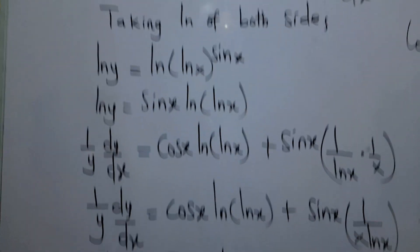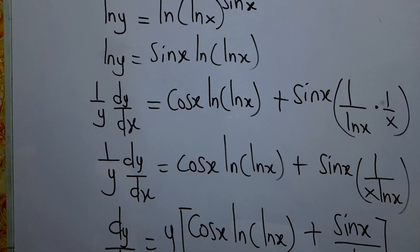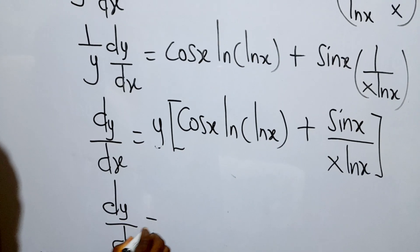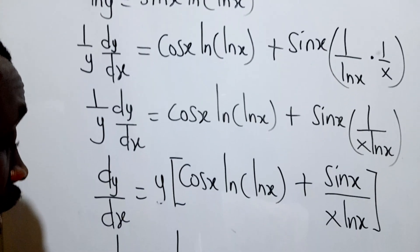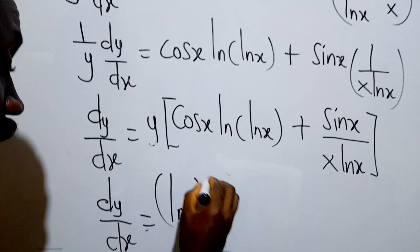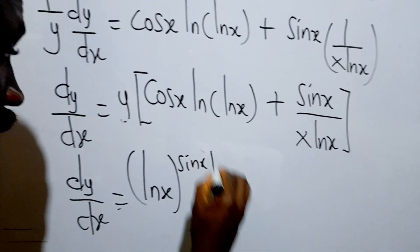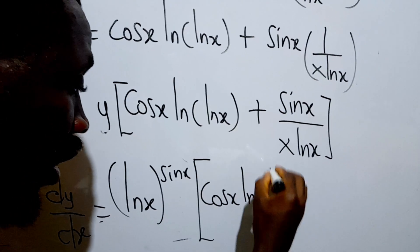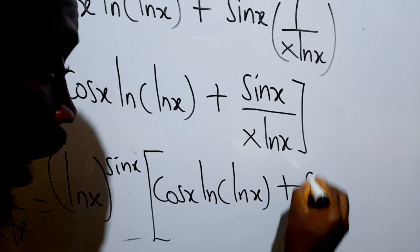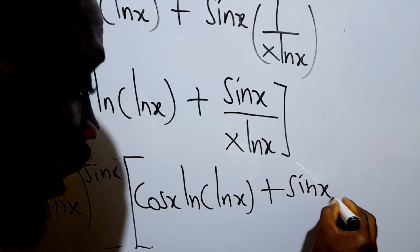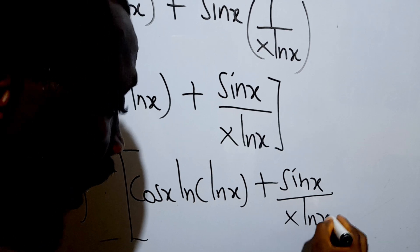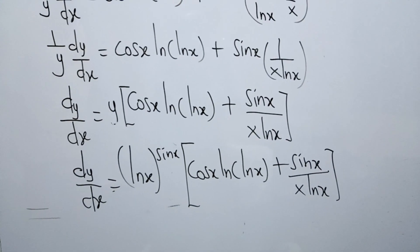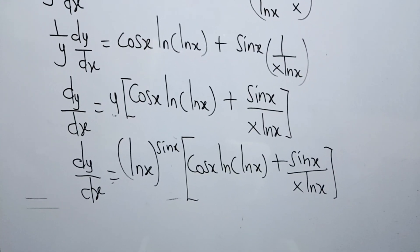We can now substitute y back in, so our final answer is: dy/dx equals ln(x) raised to sin(x), times the bracket: cos(x) · ln(ln(x)) plus sin(x) over (x · ln(x)). That is our derivative. I hope you found this helpful.